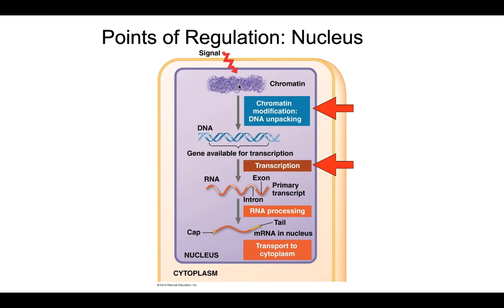The various transcription factors that bind to DNA are going to be involved in — instead of directly recruiting RNA polymerase — oftentimes modifying chromatin to unpackage it or to recruit other proteins. So these two processes, the regulation of chromatin packaging and the regulation of transcription, are really linked.